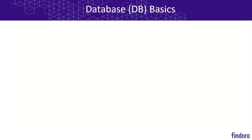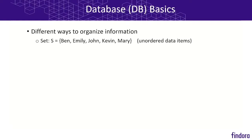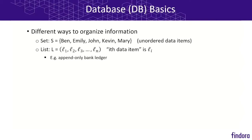Let's begin with some database basics. There are different ways to organize information in a database. The simplest type of data structure is a set, which is simply a collection of unordered data items — we have a set of names. A list is like a set except that the items are ordered; we may talk about the ith data item, denoted l_i. An example is an append-only bank ledger of transactions, where the order of transactions is crucial.